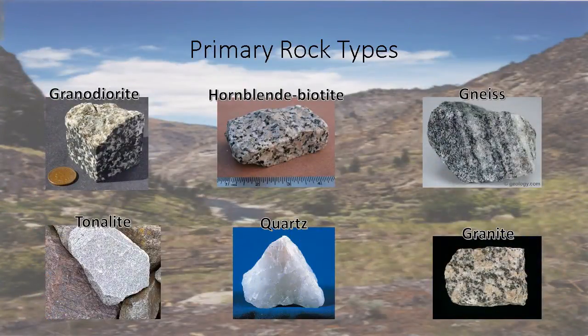The Idaho Batholith is primarily composed of granite and quartz, but also has granodiorite, tonalite, hornblende biotite, and gneiss.